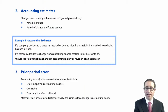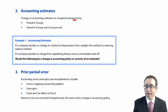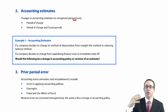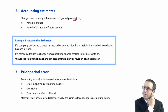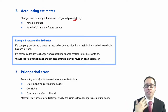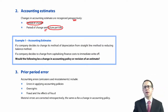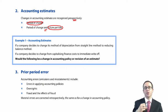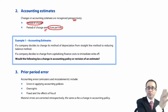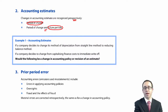We then have changes in accounting estimates, which are recognised prospectively. We don't go back and restate the comparatives or the opening retained earnings in the statement of changes in equity. If there is a change in estimates, you update it in the period of change or the period of change and future periods. For example, if you change from straight line to reducing balance, you take the carrying value at the date of change, apply the new estimate this year and into future periods — you do not restate anything from prior year periods.